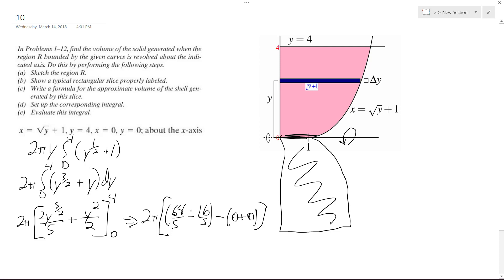Why am I getting, there should be a plus. All right, so then when we add these up, 64 over 5 plus 16 over 2.